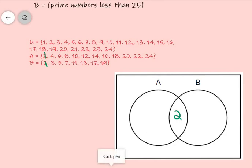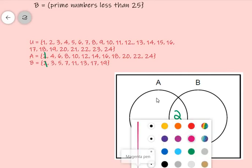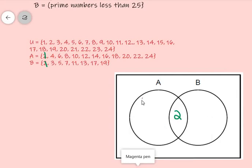Elements that are unique to set A only. Four, six, eight, ten. We're going to write all of them in set A outside of the overlap. Alright? So, we're going to write four, six, eight, ten, twelve, fourteen, sixteen, eighteen, twenty, twenty-two, and twenty-four. Awesome.